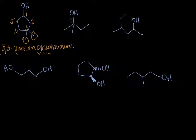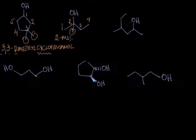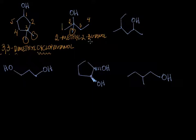Here we have a hydroxyl group. You want to look at the longest chain in the molecule that contains the hydroxyl group. Let's go ahead and number from lowest to highest. Here we would number from left to right to position the alcohol at the lower numbering. We've got a methyl group at carbon-2, so the name of this would be 2-methyl-2-butanol. When you have an acyclic or branched or straight-chain alkane, you need a number that designates where the hydroxyl group is connected.